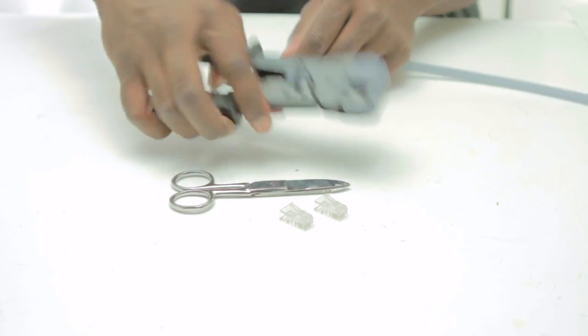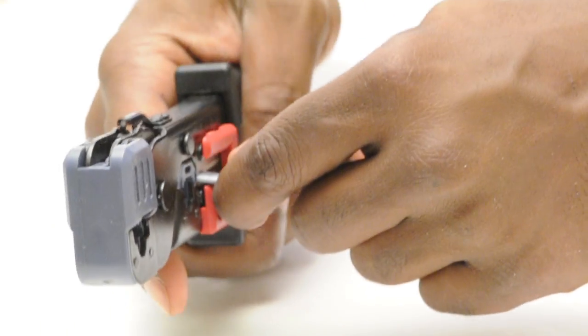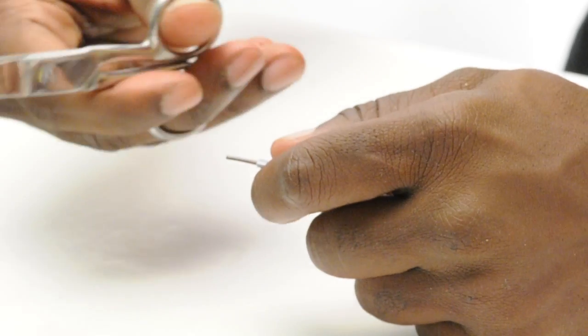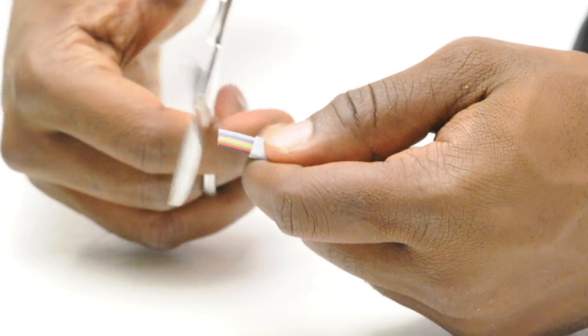Using the built-in strip function of the crimp tool I'm going to pull off the jacket. This gives you eight color-coded wires on the inside.